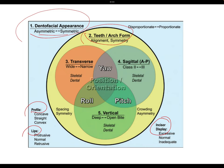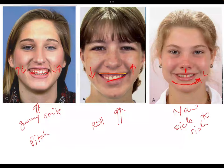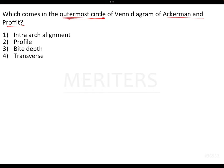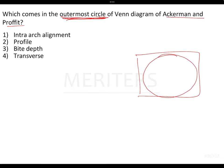The others — transverse, sagittal, and vertical axes — remain the same, with the relationships between these axes given as pitch, roll, and yaw. So in our question, which asks about the outermost circle of the Venn diagram in Ackermann and Proffitt — not the envelope, but the outermost circle — the answer is intra-arch alignment and symmetry. Initially the profile was the outermost circle, but in the new classification, intra-arch alignment and symmetry is the outermost circle.